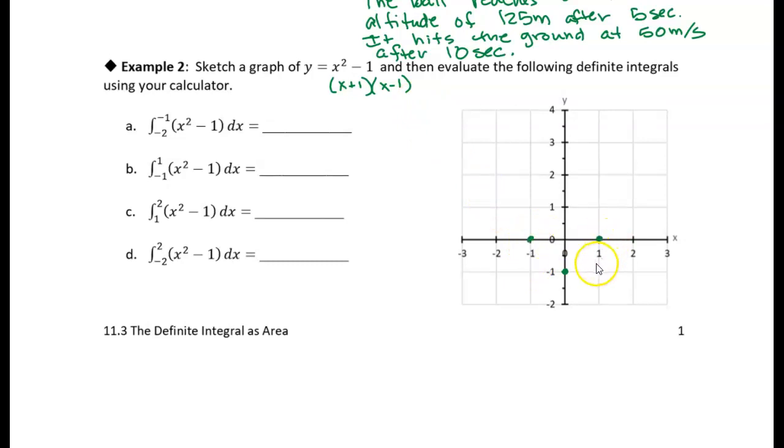I'll plug in some more values. If I put in -2, (-2)² = 4, minus 1 is 3. I get the same value if I plug in 2. So you get this nice parabolic curve. There's my attempt at sketching the curve.